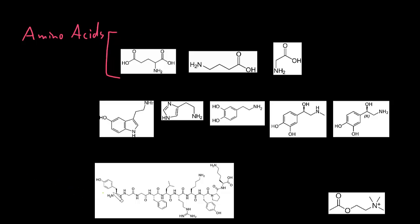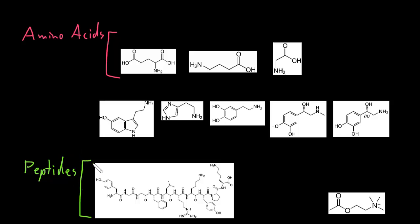The next category of neurotransmitters is the peptides — peptide neurotransmitters. Peptides are actually polymers or chains of amino acids. A bunch of amino acids get strung together in these chains, and we call them peptides. Peptides are much larger molecules than all the other types of neurotransmitters, so sometimes people divide up neurotransmitters just into peptides and lump together all the other neurotransmitters, calling them small molecule neurotransmitters.